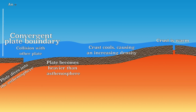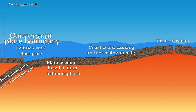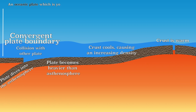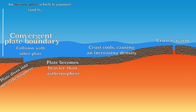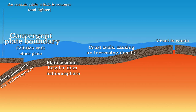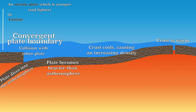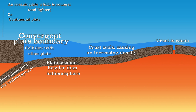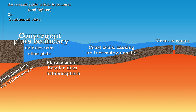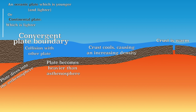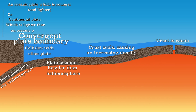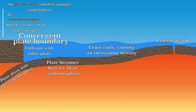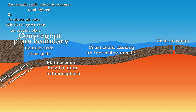The other plate can be an oceanic plate, which will then be lighter and therefore younger. The other plate can also be a continental plate. A continental plate is always made of lighter material than an oceanic plate, and the continental plate will therefore not dive into the heavier asthenosphere.